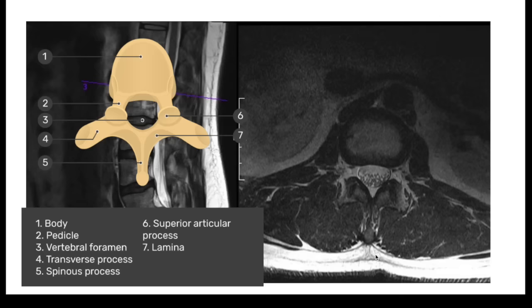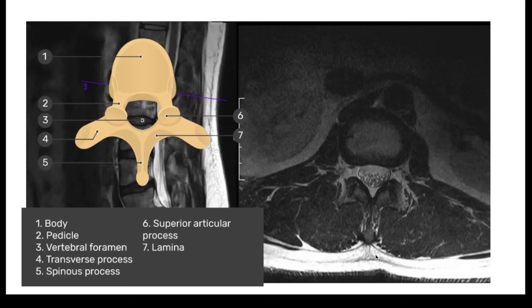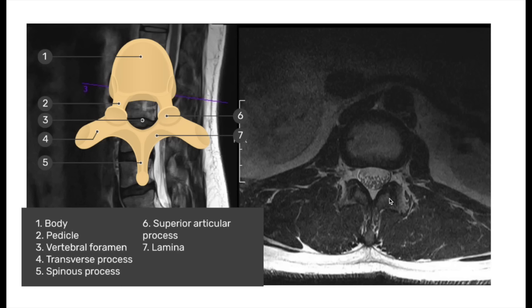This is the back, this is the front. This is the spinous process. This is the lamina on both sides. And these are the facet joints — you have a superior articular facet and also an inferior articular facet. These are basically just two bones that support the structures in the back.